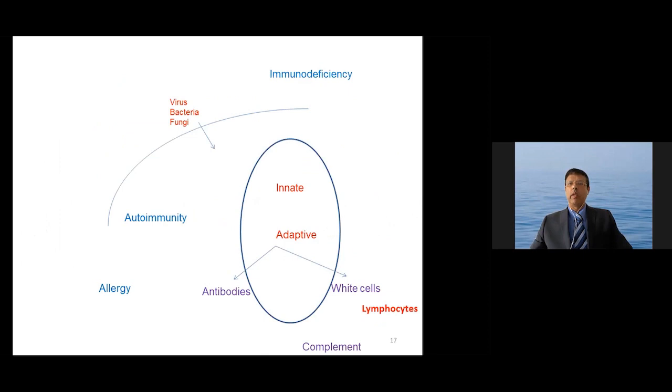So in this short video, I've told you the different components of the immune system, the innate immune system, the adaptive immune system with antibodies and lymphocytes, getting rid of viruses, bacteria, and fungi. And told you that immune deficiency can occur if there is underactive immune system and autoimmunity and allergy can occur if there is a dysregulated immune response, which is seen in some patients. Thank you very much.